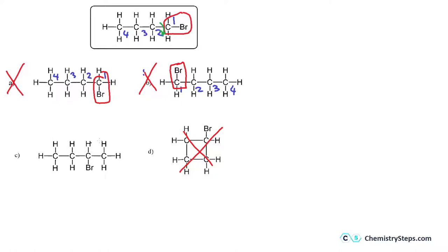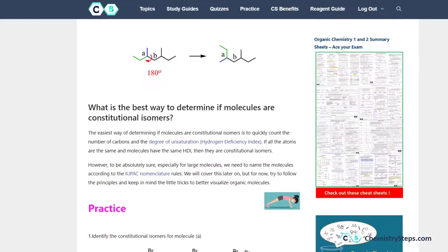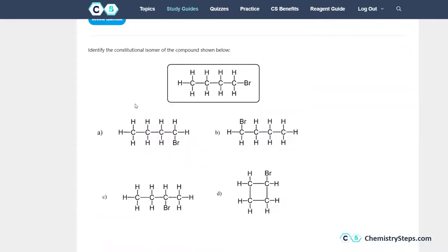For the next option, numbering from right to left gives one, two, three, four. Now carbon number two is connected to the Br instead of carbon number one. This is a constitutional isomer — it has the same number of carbon and hydrogen atoms plus one Br atom, but the Br is connected to a different carbon. This is the correct answer. The ring structure is not correct because it introduces a degree of unsaturation.